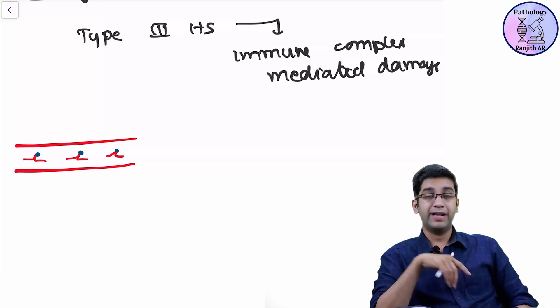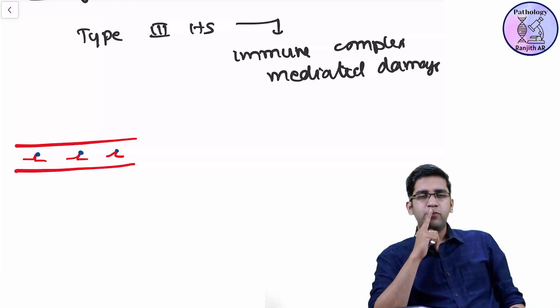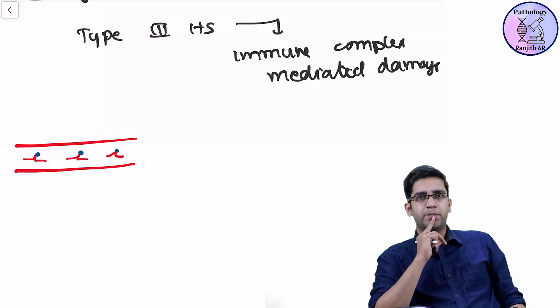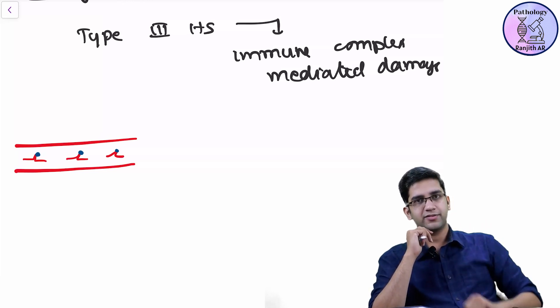Perfect. When they get deposited in my endothelium. So tell me again, when will my immune complex get deposited in my endothelium? When the flow is slow or when the flow is faster? Obviously, when the flow is sluggish.